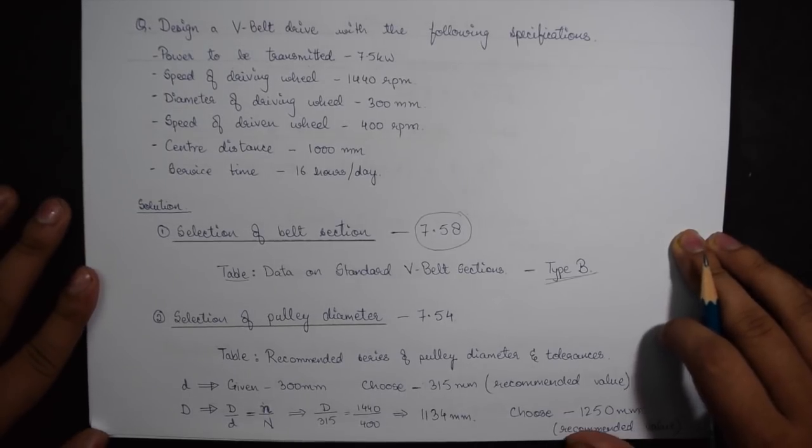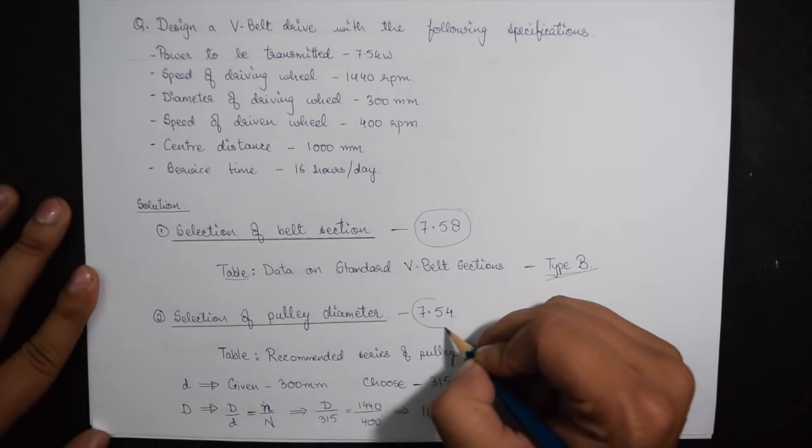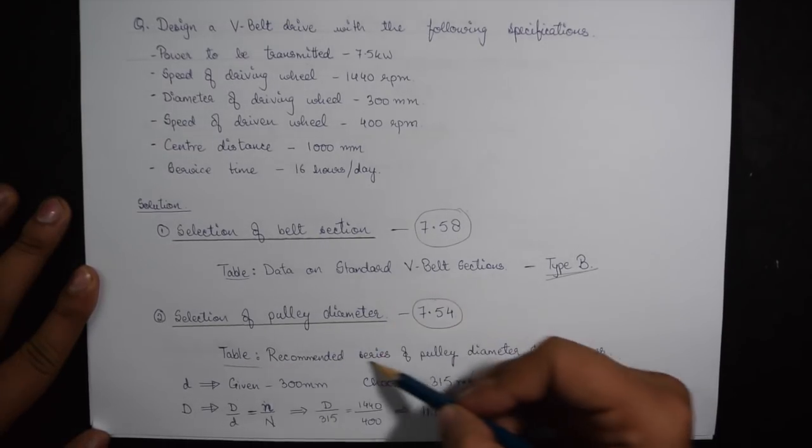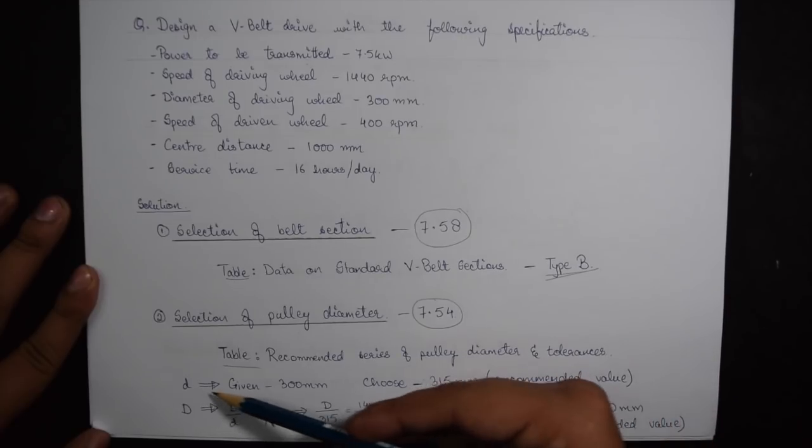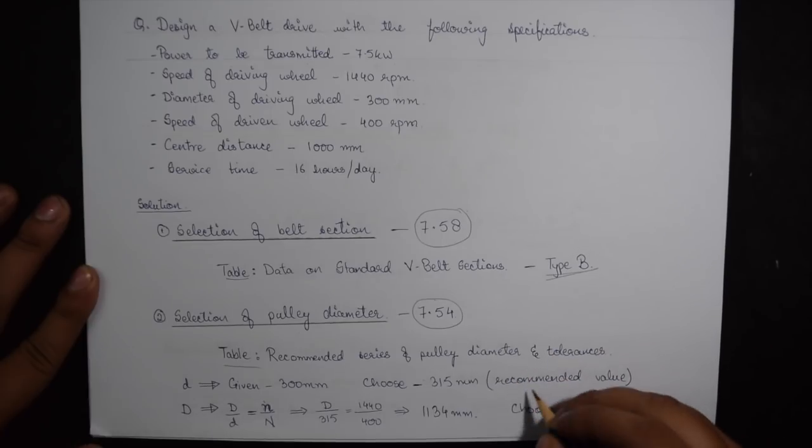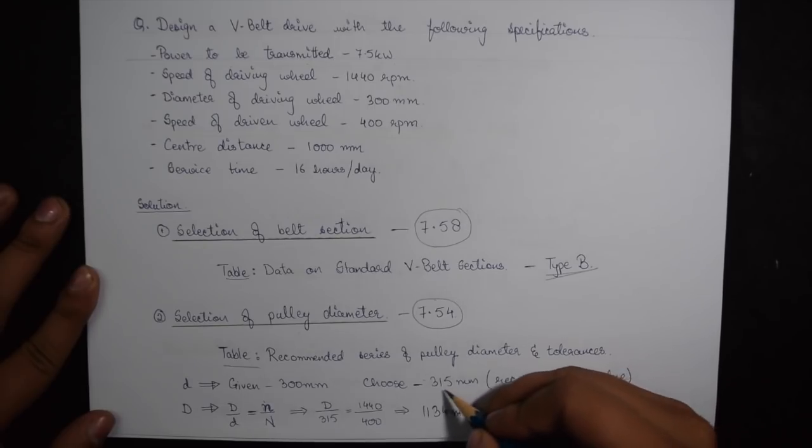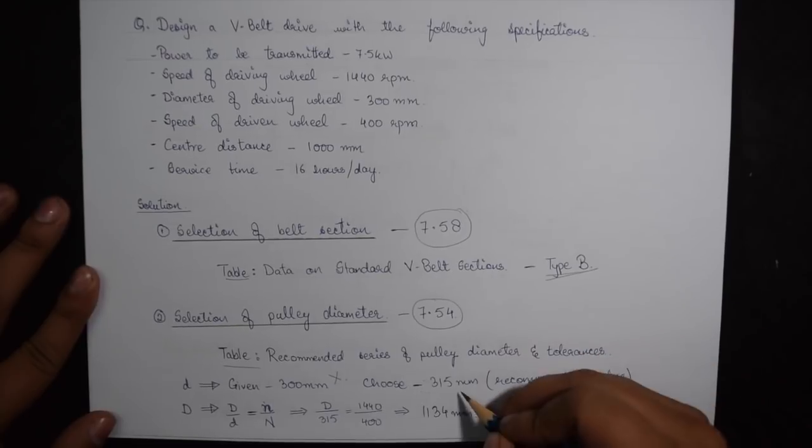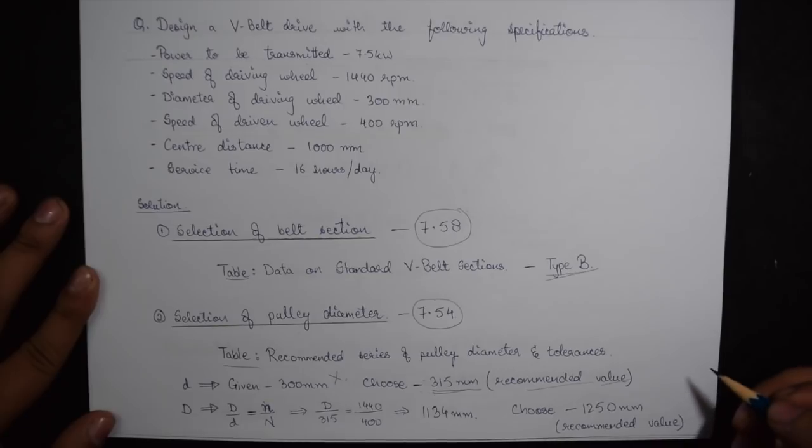Next step is selection of pulley diameter. Jumping on to page 7.54, we have a table saying recommended series of pulley diameters and tolerances. Now given in our question the diameter of driving wheel is 300 mm. If we look in the recommended series of pulley diameters and tolerances under the nominal diameter section, we do not find 300 mm as such given in the table. So we will be choosing 315 mm as our nominal diameter. This is d.